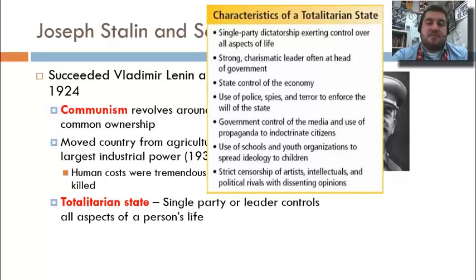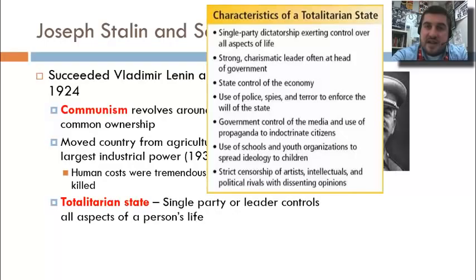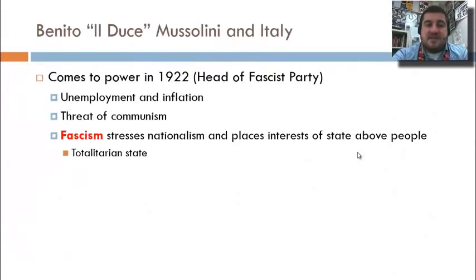Stalin also turned the Soviet Union into a totalitarian state. A totalitarian state is one where a single party or leader controls every aspect of a person's life — what they eat, how they dress, where they work, how much food and money they get. Other characteristics include using the media to control and warp people's minds, and using schools to indoctrinate students. All of these regimes became totalitarian states.